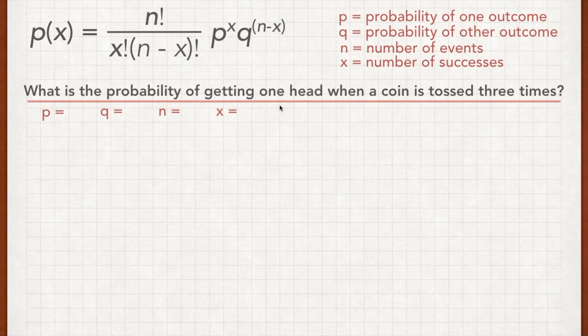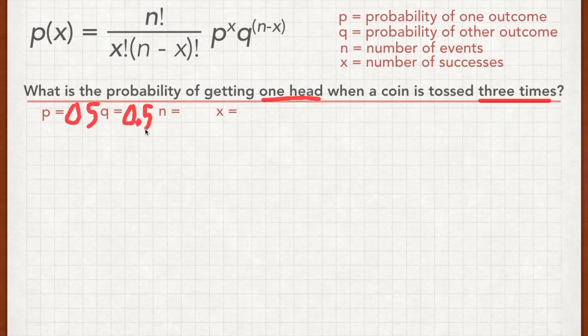So let's try an example. What's the likelihood of getting one head when a coin is tossed three times? So we're still dealing with coins, so the likelihood of getting heads is 0.5, as is the likelihood of getting tails, so p and q are both 0.5. n, the number of events, I'm tossing the coin three times, so n equals 3. And x, the number of successes, I'm interested in the likelihood of getting one head, so x equals 1.